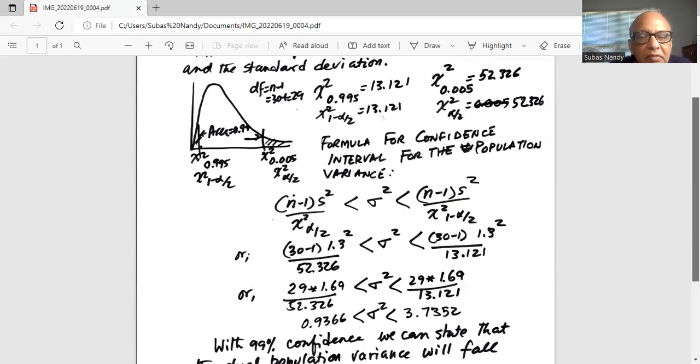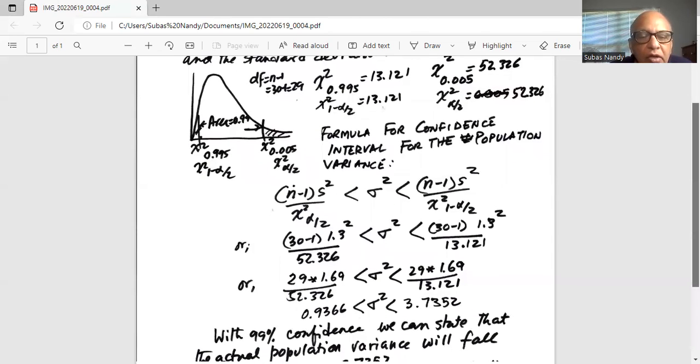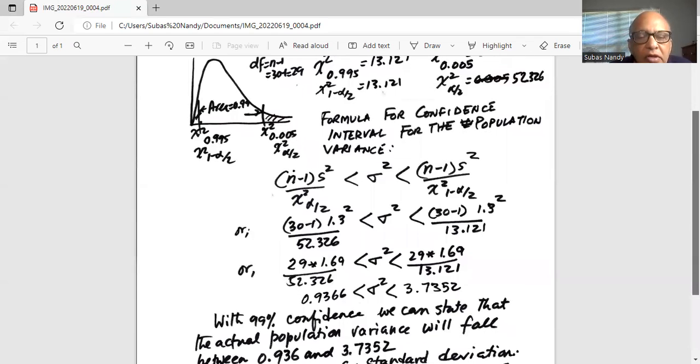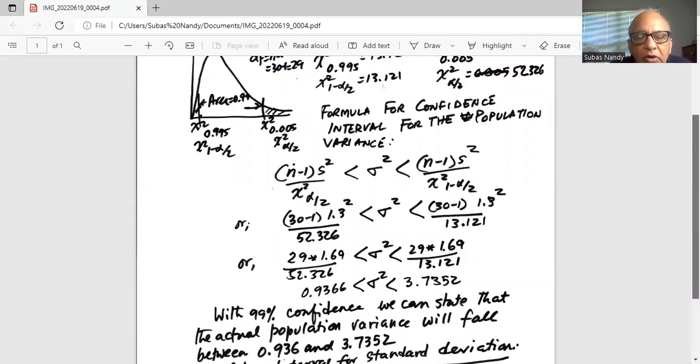the right boundary is 30 minus 1 times 1.3 squared divided by chi-square 1 minus α/2 which is 13.121. So the lower boundary is 29 times 1.69, which is 1.3 squared, divided by 52.326, whereas the upper boundary